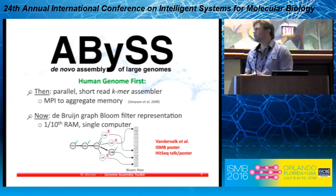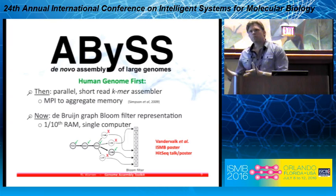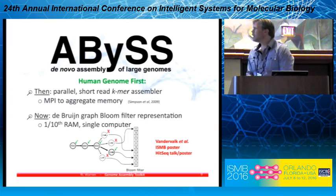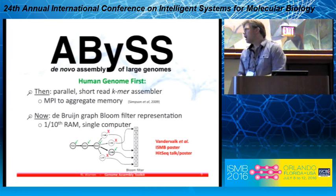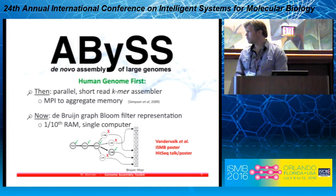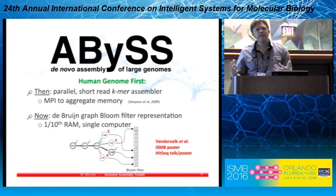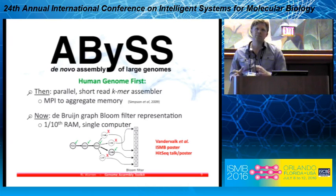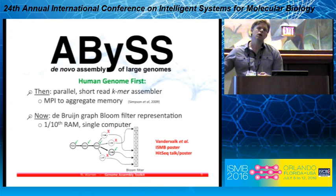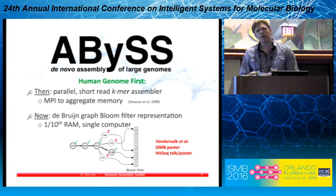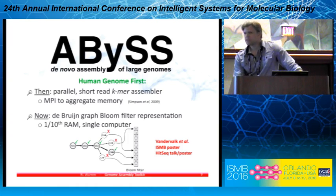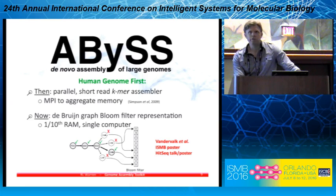We now have a new version of ABYSS that implements the Bruin graph via a bloom filter data structure. The bloom filter is a succinct probabilistic data structure. I invite you to visit poster N18 from Ben van der Waal, who led these efforts. With this, we can achieve an assembly in about a tenth of the memory otherwise required to assemble the human genome — assembling human with regular ABYSS requires between 400 gigs of RAM to upwards of one terabyte, but now you can do it on a single machine with between 40 and 50 gigs of RAM.